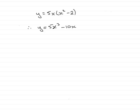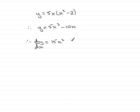Then you'd have gone ahead and differentiated each term. dy by dx would have been 15x squared minus 10.